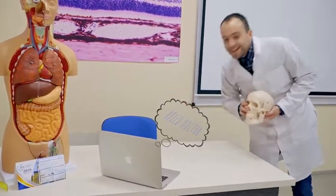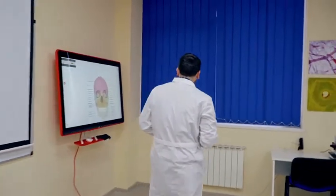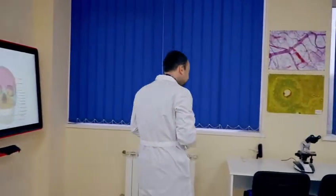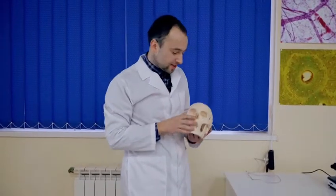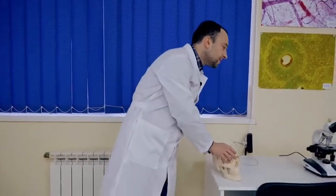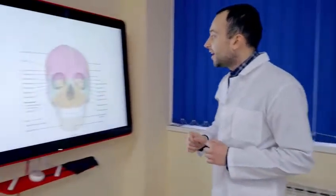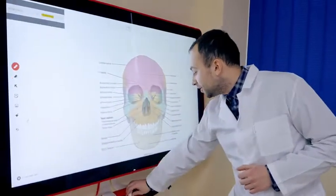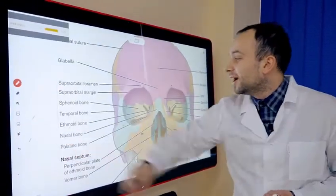Hello everyone. Today I want to show you the structure of the orbital cavity. Unfortunately the models can't show us all the smallest and tiniest things in the structure, that's why I use the gym board. In the gym board I can zoom anything I want.